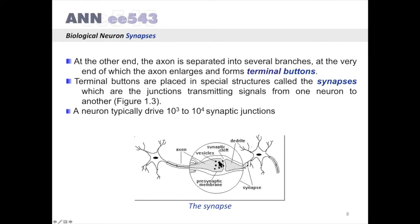Terminal buttons are placed in spatial structures called the synapses, which are the junctions transmitting signals from one neuron to another. It is shown in this figure. A neuron typically drives 10 to the power 3 to 10 to the power 4 synaptic junctions.